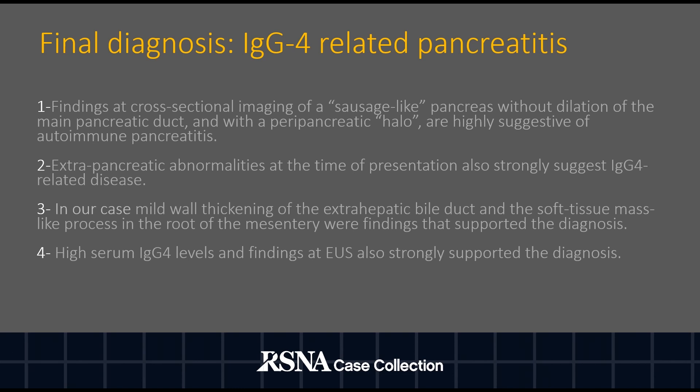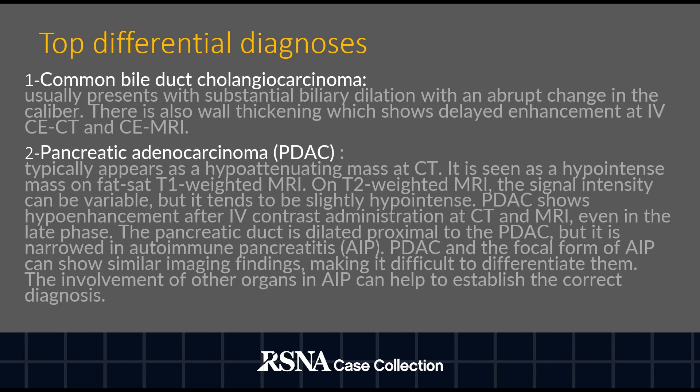High serum IgG4 levels and findings at EUS also supported the diagnosis. The three primary differential diagnoses were common bile duct cholangiocarcinoma, pancreatic adenocarcinoma, and acute pancreatitis. Common bile duct cholangiocarcinoma usually presents with substantial biliary dilation with an abrupt change in caliber. There is also wall thickening which shows delayed enhancement at IV contrast-enhanced CT and contrast-enhanced MRI.